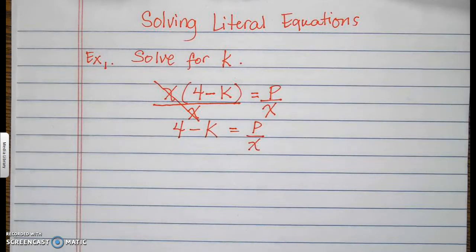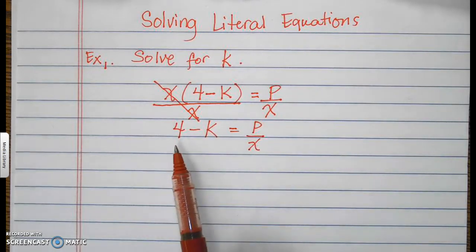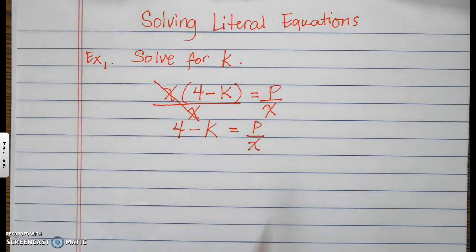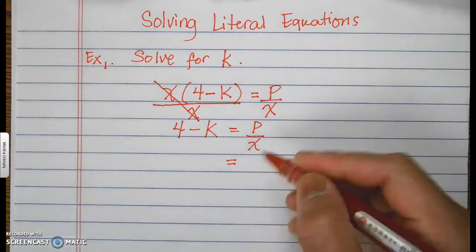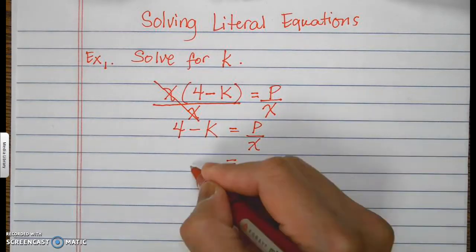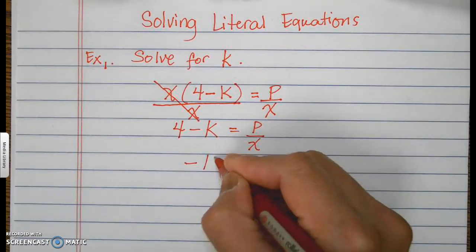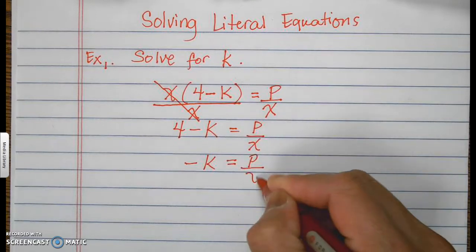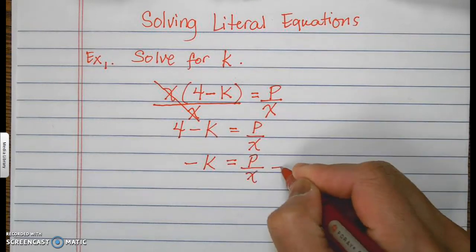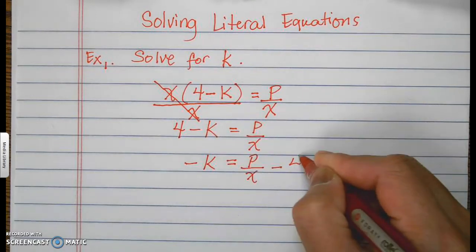Now we're solving for k, so we need to remove the 4 and put it on the other side. This will turn into negative k equals p over x minus 4.